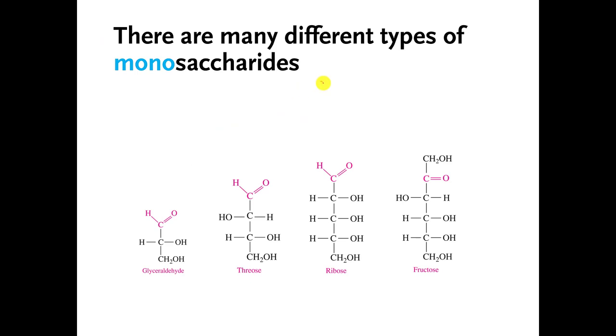There are many different kinds of monosaccharide molecules. These are some examples here. These are not the only examples. This one here, you don't need to know what it looks like. You don't need to know its name. But if you look, it has three carbons. One, two, three.